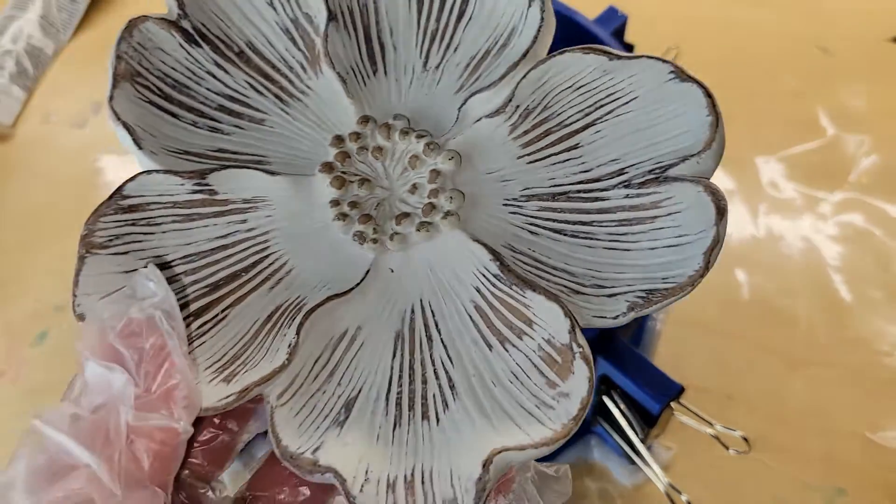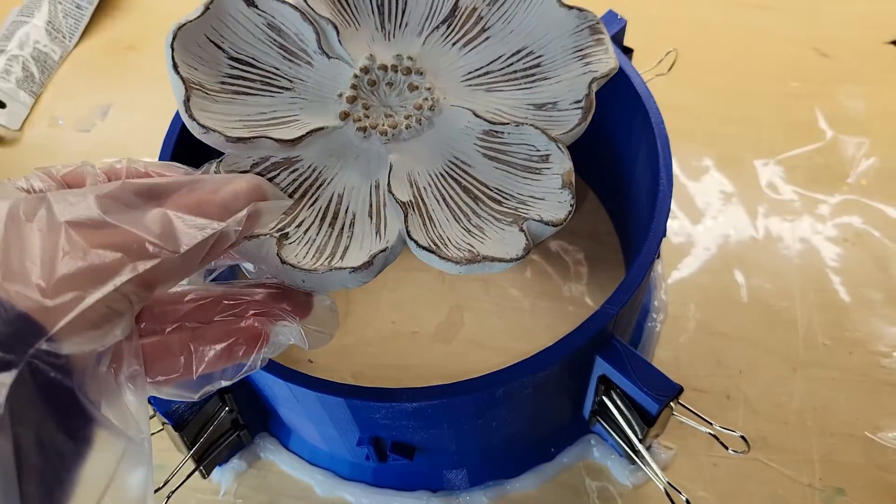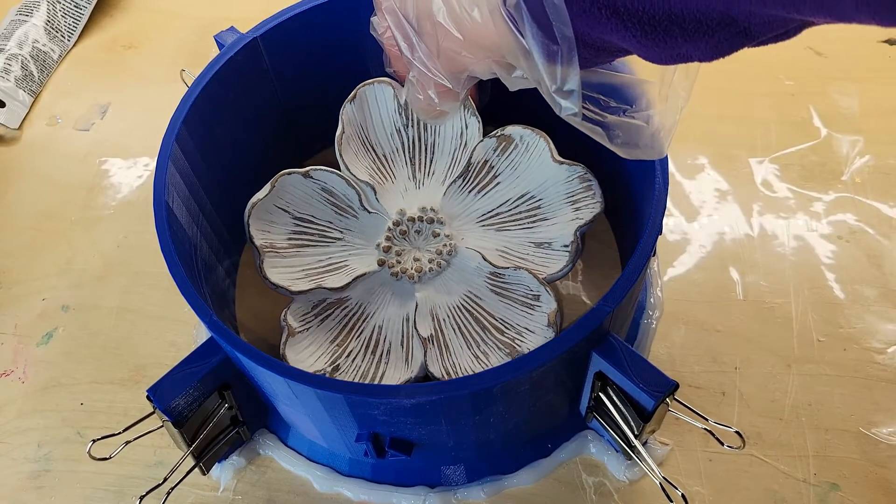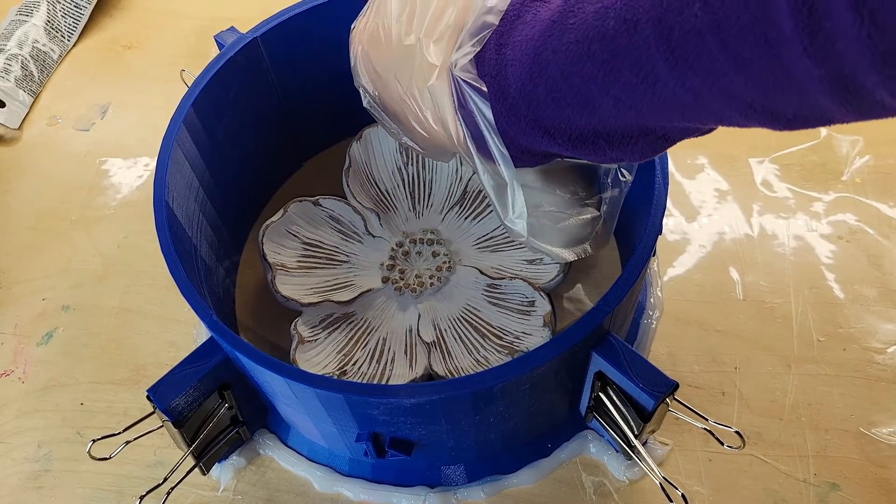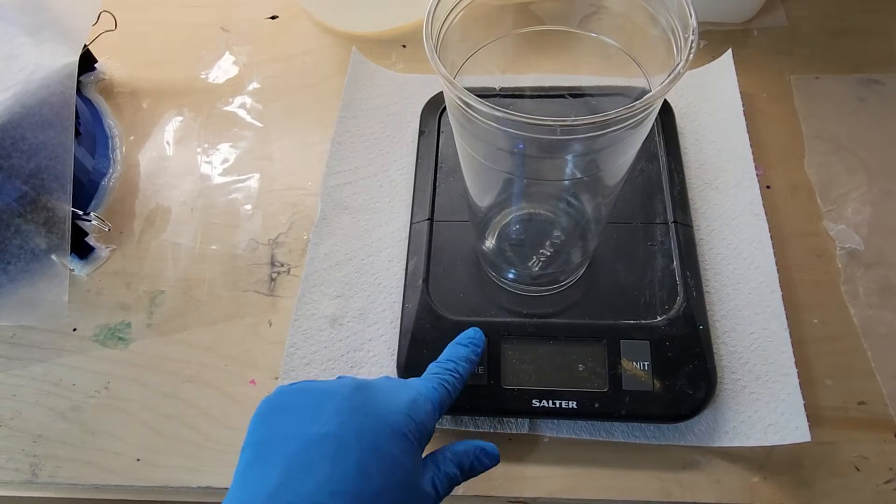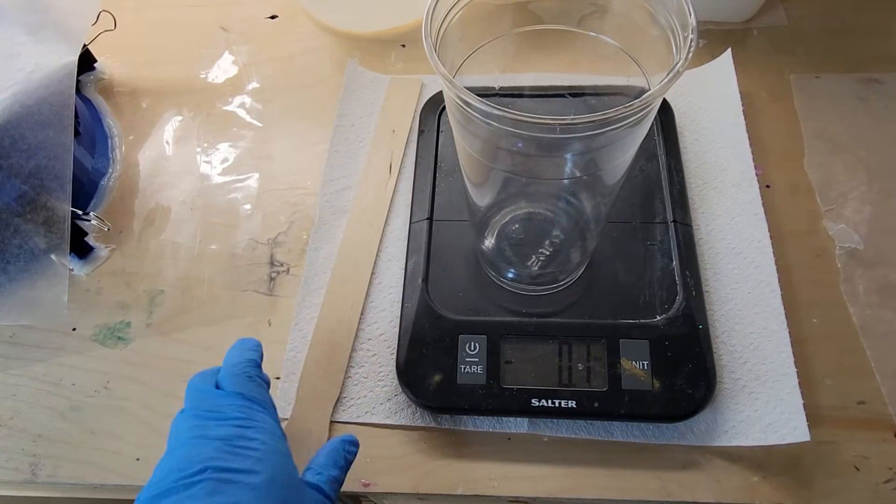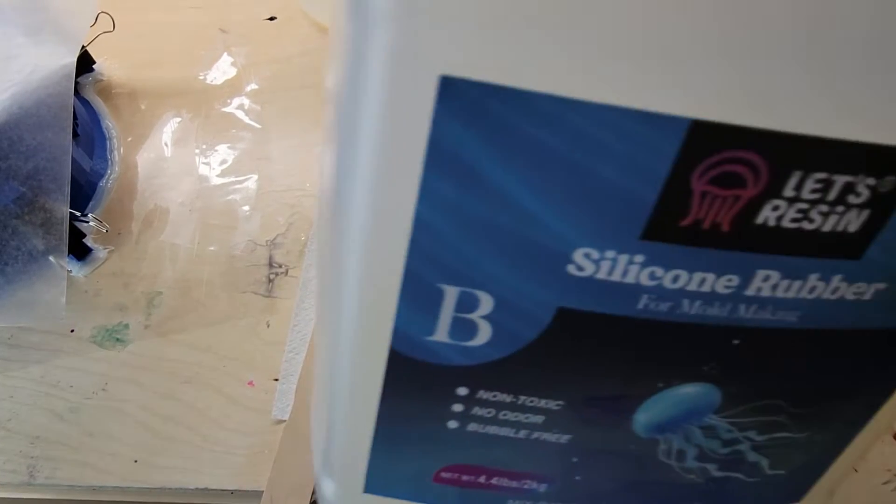This is the flower that we're going to be molding. I took a microfiber cloth and cleaned it off. I have been handling this piece with gloves—you don't want to get fingerprints or natural oils from your hands on the pieces you're molding. I cleaned it off and positioned it down on my tape. Now we're going to mix up our silicone rubber.